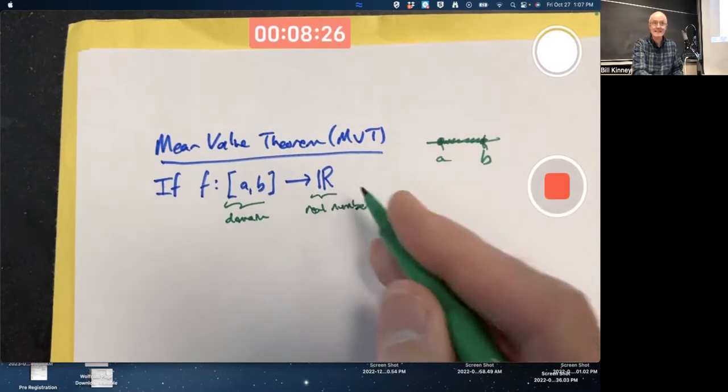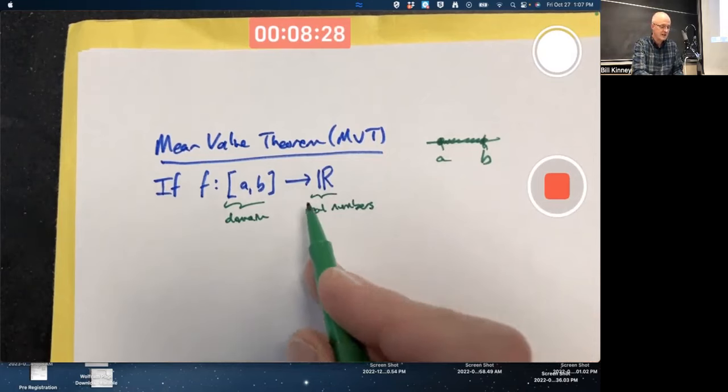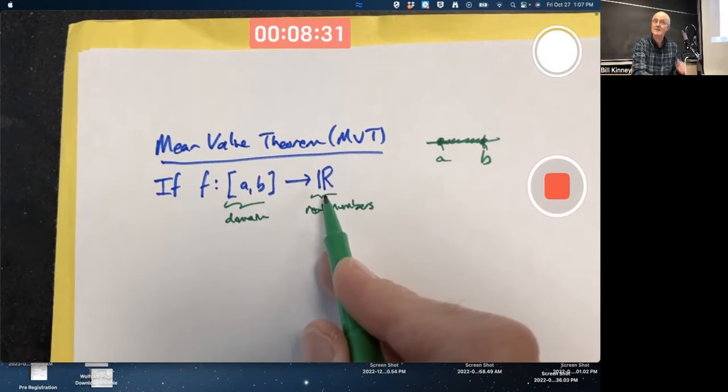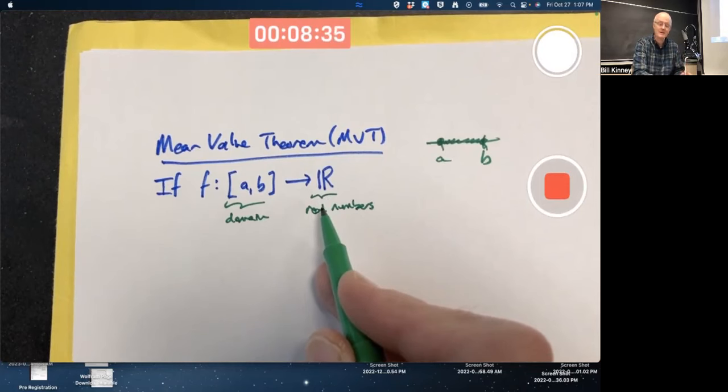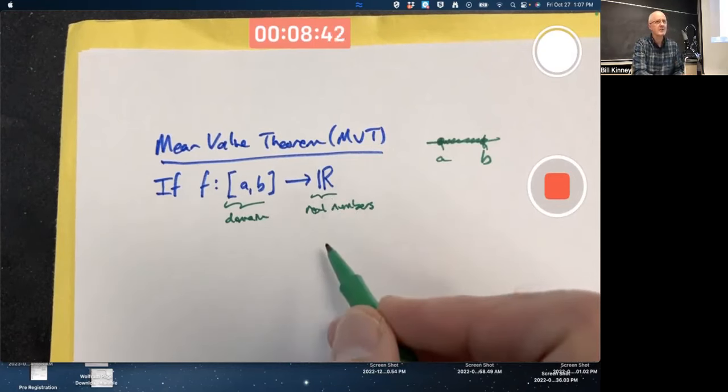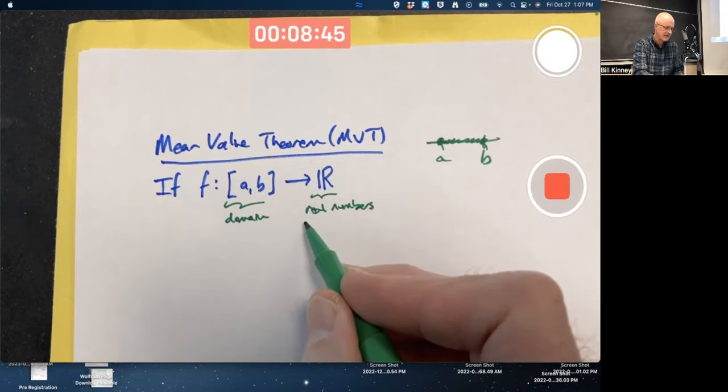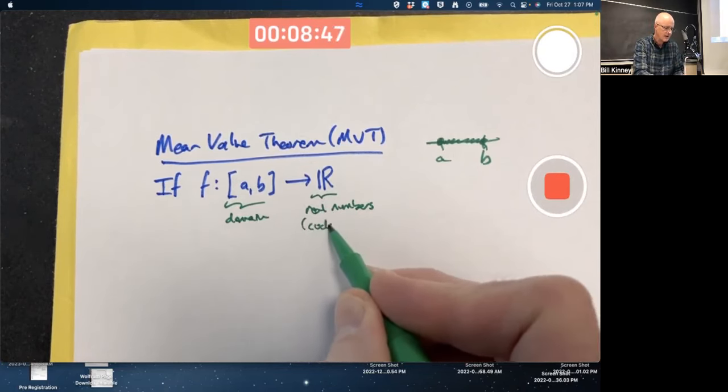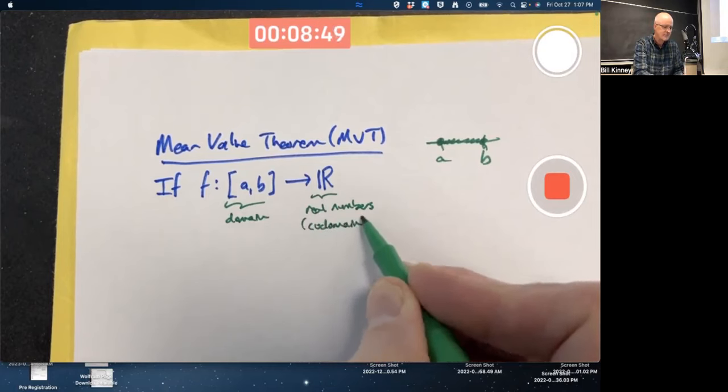And as a set for this function, this is the set of all possible outputs. It's not necessarily every real number is an output. The function is not necessarily onto, we say. Some people call this the range, some people call it the target. I prefer calling it the codomain. I prefer using the word range for the actual set of all outputs. These are just possible outputs.